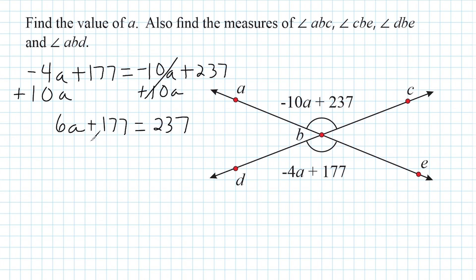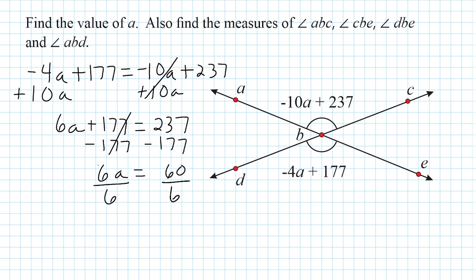Now we do the opposite of adding 177 — subtract 177 from both sides. Taking away 177 from 237 gives us 60, and we have 6A on the left. We divide the coefficient by itself and divide the other side by 6 as well, leaving us with A on the left and 10 on the right. So the value of A is equal to 10.